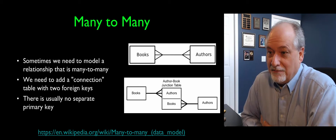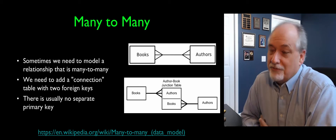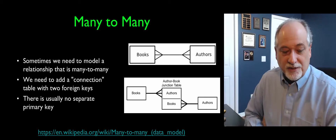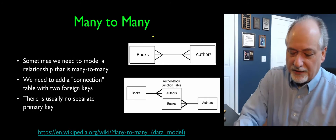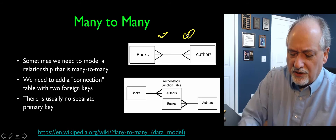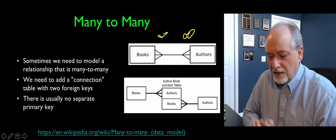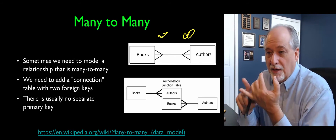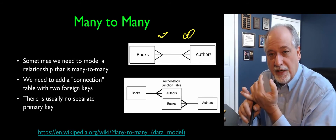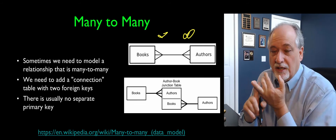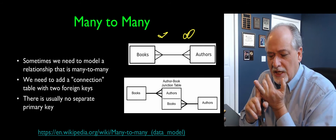If you've been playing along, artists mapping to albums is really a many-to-many relationship — we oversimplified it so we could work through it. But like books and authors, or artists and albums, there really is what's called a many-to-many relationship. An author can be part of any number of books, and a book can be written by any number of authors.